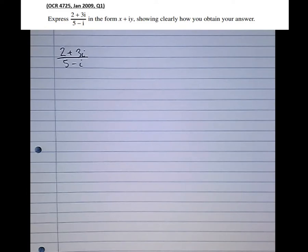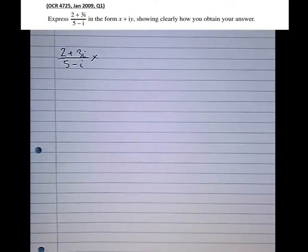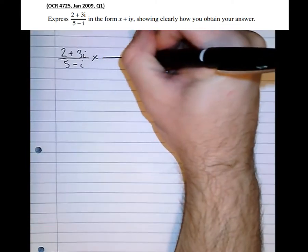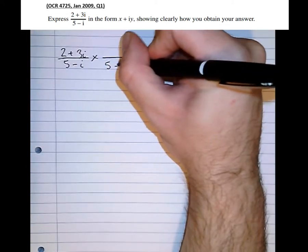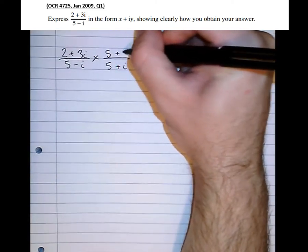So this one is asking us to divide by 5 minus i. Now an easy way of doing that is following a process very similar to that which we do in surds. Multiplying by the complex conjugate 5 plus i over 5 plus i.